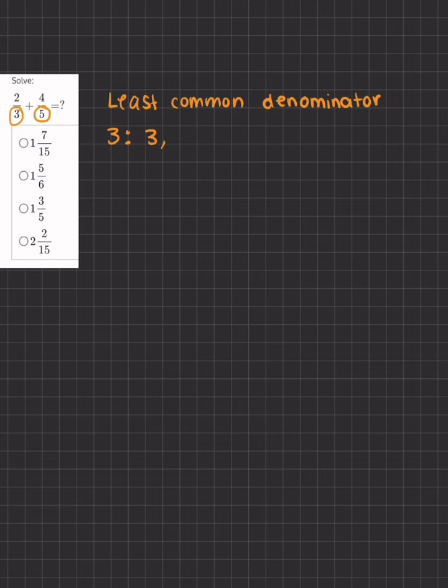we'll start at 3, 6, 9, 12, 15, 18, and we could go on, but we'll stop there. Now let's list out the multiples of 5: 5, 10, 15, 20.